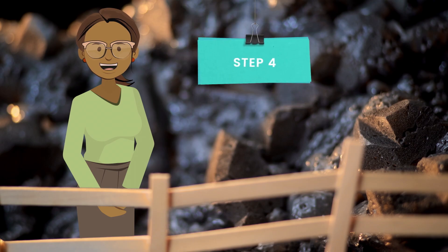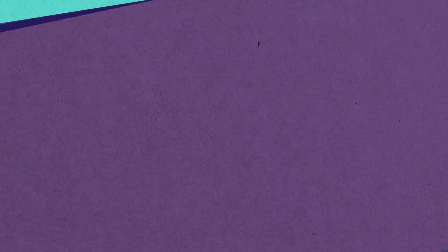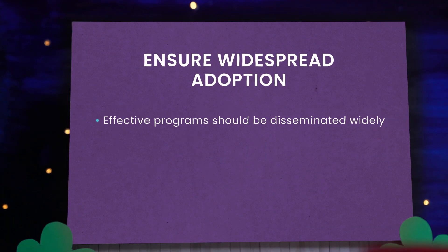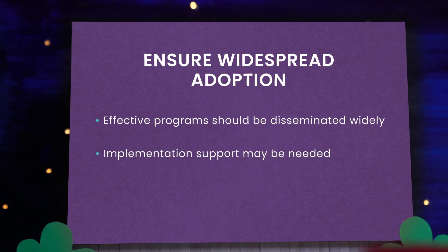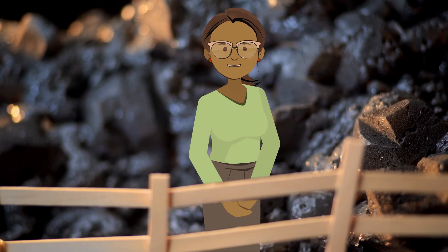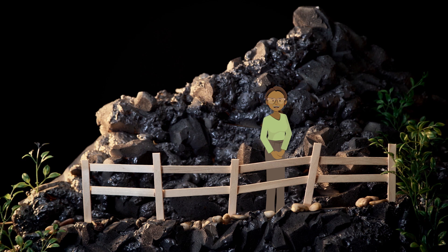Step 4 is to assure widespread adoption. Once programs have proven effective, they should be disseminated broadly. Effective programs may require additional support as they are implemented in new settings or among different populations. This may include training, monitoring, and technical assistance to support effective implementation. Additional assessments to determine which components can be adjusted and which ones must be delivered as originally developed may be necessary.